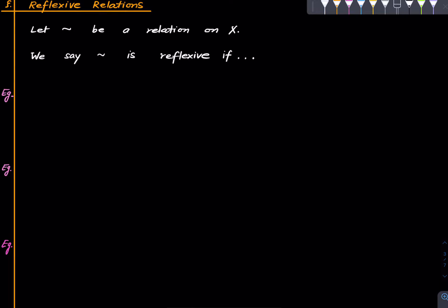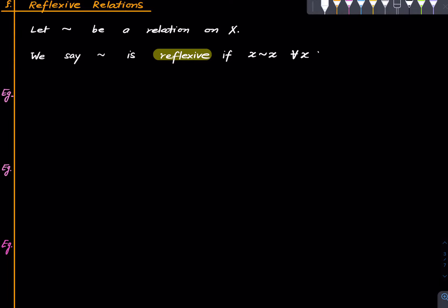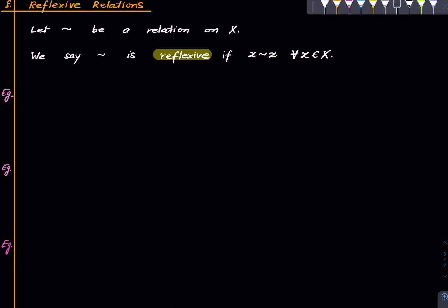We will discuss a special kind of relation called reflexive relations. We will use tilde as our notation. Suppose tilde is a relation on a set X. We say tilde is reflexive if x tilde x for all x in X, which means the pair (x, x) is in tilde for all x in X — that is, every element is related to itself.